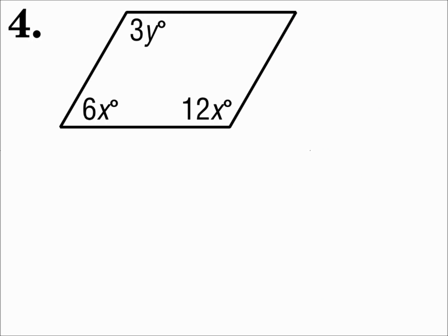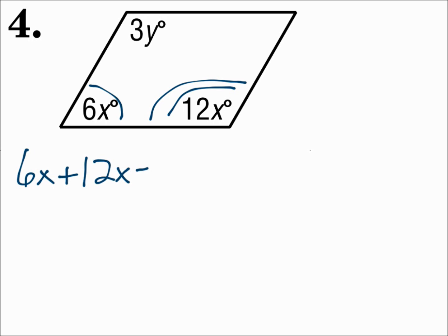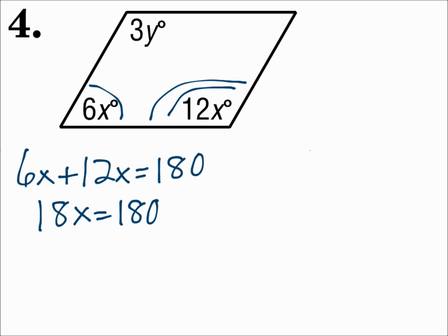Number four. On this one, we're dealing with angle measures. In a parallelogram, opposite angles are congruent. But I don't want to say 3y equals 12x. I also know that consecutive angles are supplementary, and I do have two consecutive angles that just use an x. So those two angles are supplementary, which means that 6x plus 12x equals 180. Solving that: 6x and 12x make 18x. Divide by 18, and x is 10.